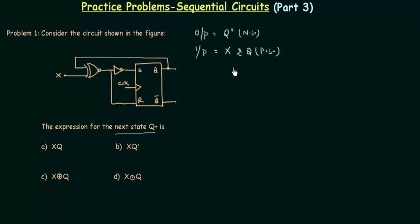So we will move to the characteristic table to find out the expression for Q+. The inputs are X and Q. There are two inputs and four possible combinations: 0 0, 0 1, 1 0, 1 1. To find out Q+, we must know the expression for S and R in terms of this input X. So we will do that first.